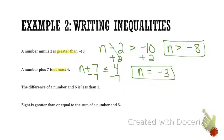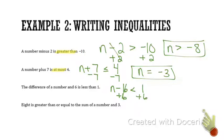Let's look at the next problem. It says: the difference of a number and 6 is less than 1. Pause the video and try to write the inequality and solve it. The difference of a number and 6 would be n minus 6 is less than 1. Opposite operations — add 6 to both sides — and n is less than 7.